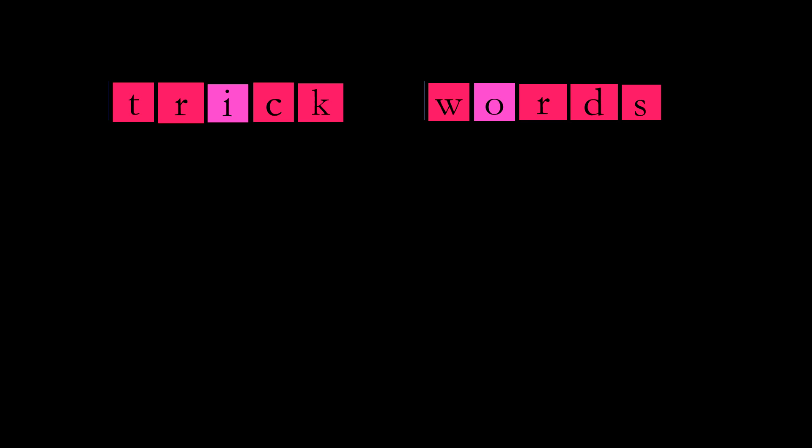We haven't done trick words in a while, so let's take a look. There are six of them. The first one is January. The next one is the month that comes after January: February. Remember it's not February, it's February. If you say it correctly, you'll be able to spell it correctly too.